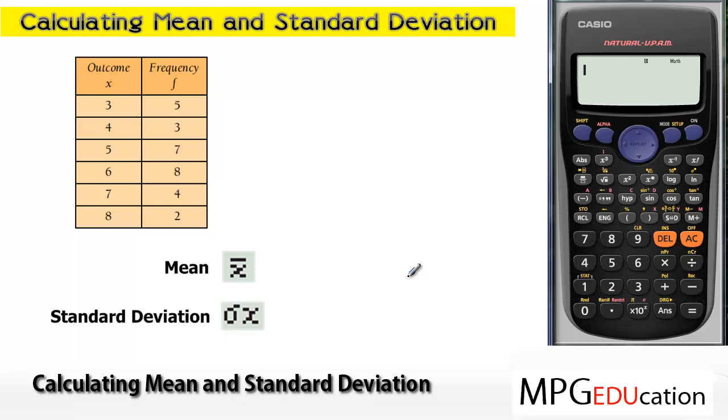Okay, in this part, we're going to go through how to enter data in to your Casio calculator that's in the form of a frequency table, where you have a list of scores and also a list of their frequencies. In order to do that, you need to make sure that you have two columns set up on your Casio calculator to enter each of those columns of data in.